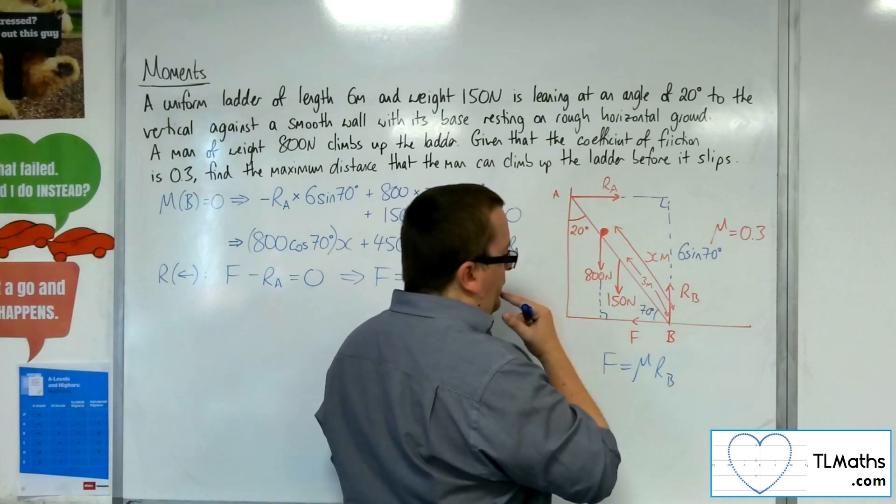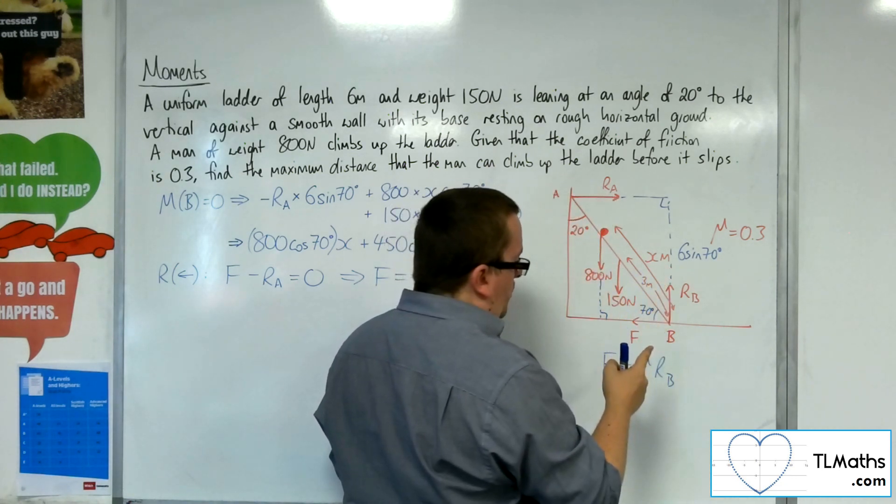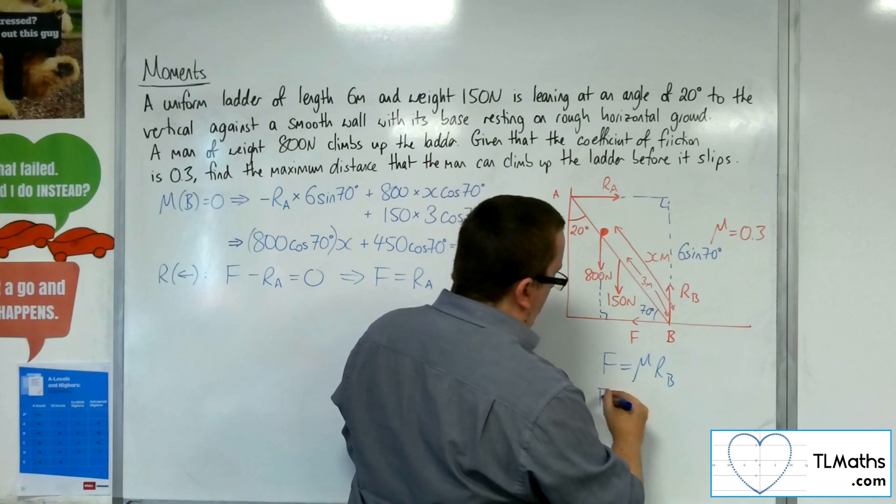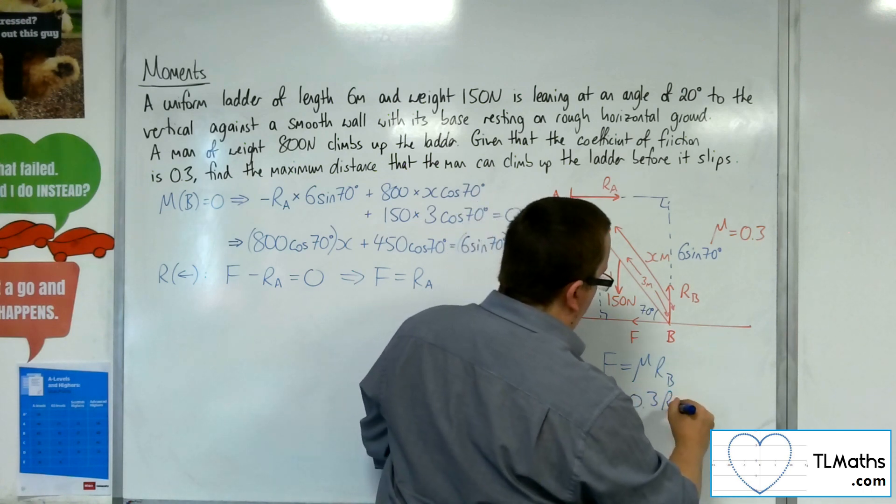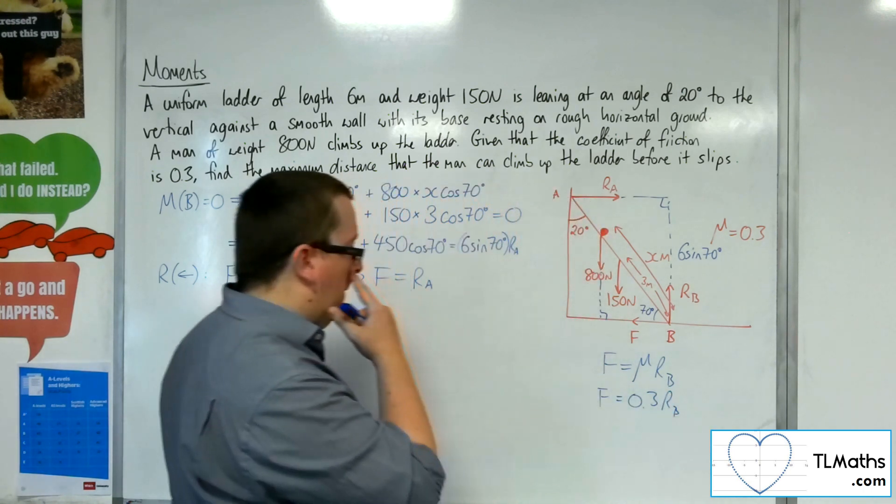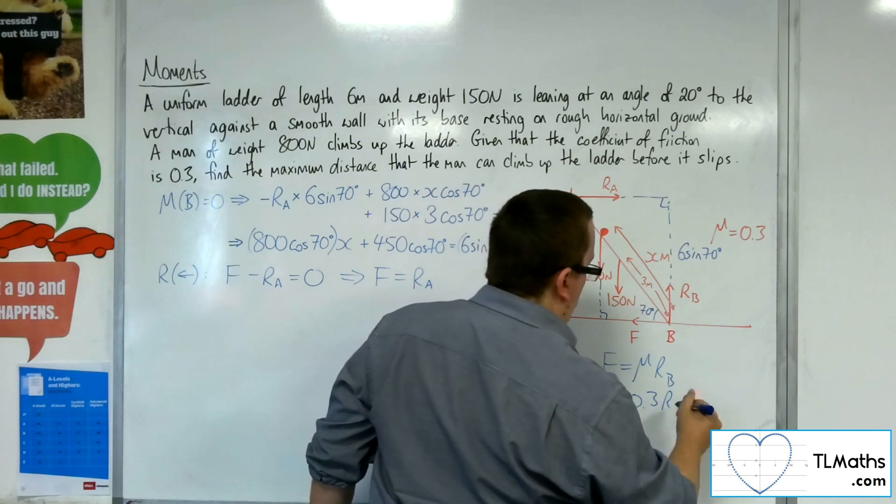So if we're looking at just before it slips, we're in limiting equilibrium. So that means that F is equal to mu times RB. So we know mu is 0.3. So F is equal to 0.3 RB. Now, can we work out RB?